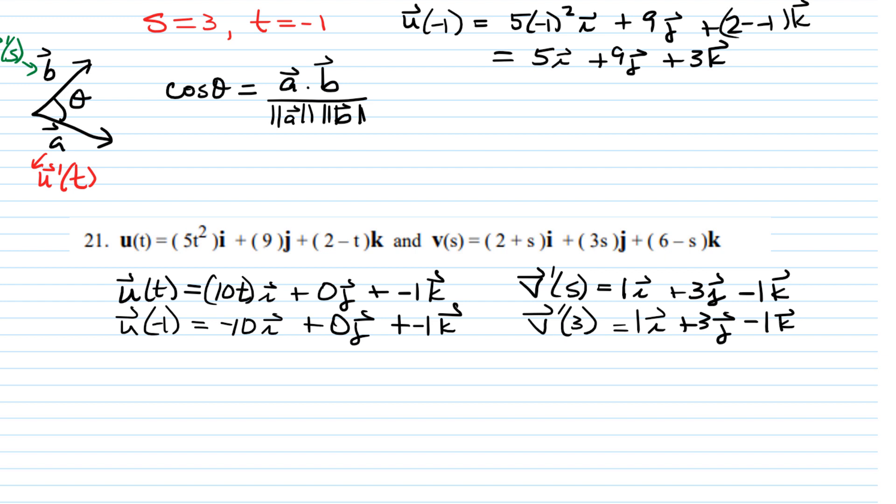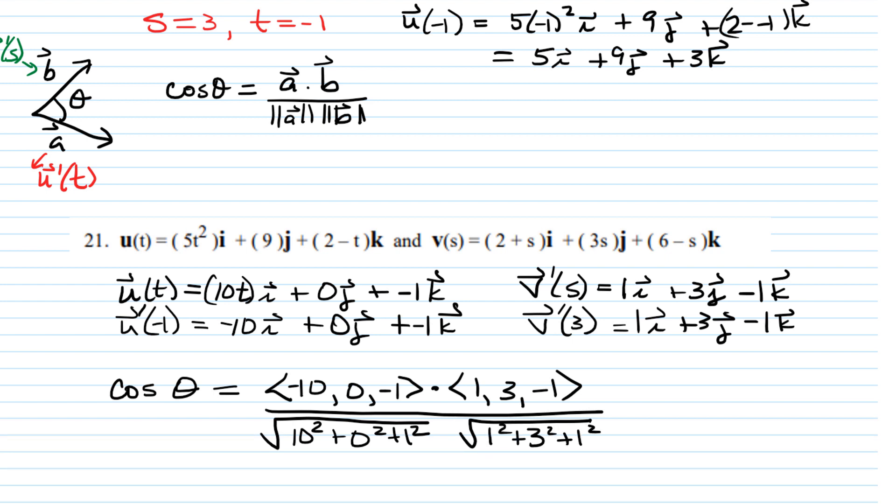And now we're going to find theta. So cosine of theta, the angle between them, is going to be, I'm going to write it a little more compactly, negative 10, 0, negative 1 dot product with 1, 3, negative 1 divided by the norms or the magnitudes of each. So that's going to be negative 10 squared. I'm going to write it as 10 squared, since it's going to be positive anyway, plus 0 squared plus 1 squared, square root, and then times the square root of 1 squared plus 3 squared plus negative 1 squared.